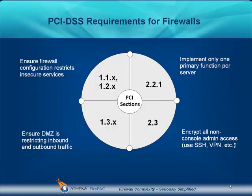PCI DSS 1.2 defines 12 high-level requirements for PCI compliance. Many of these address application security, vulnerability management, or process issues. Of these 12, requirement 1 and some of the control items in requirement 2 specifically address firewall configurations. Let's look at these in a little more detail.